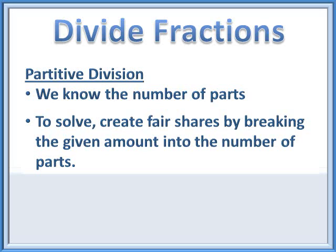The last type of division problem we looked at was measurement division, where we knew the measure or the size of the amount being repeatedly subtracted but didn't know the number of parts. The only other type of division problem is partitive division — that's where you know the number of parts but you don't know the size of the part. To solve these problems it's best that students create fair shares, taking the whole amount and dividing it into equal parts.